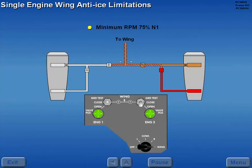The minimum RPM for icing conditions with only one engine supplying wing anti-ice is 75% N1.